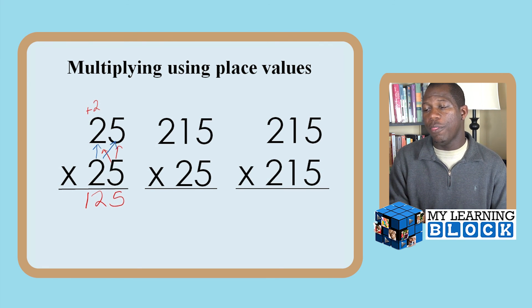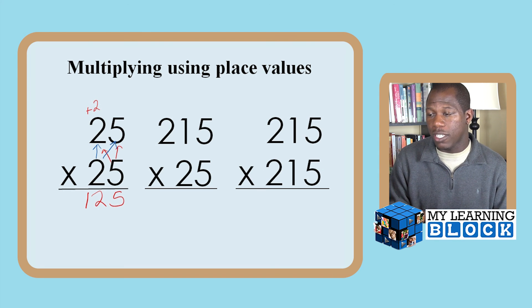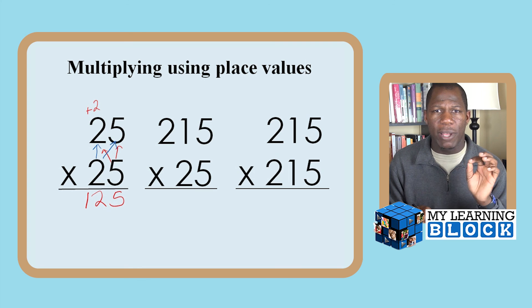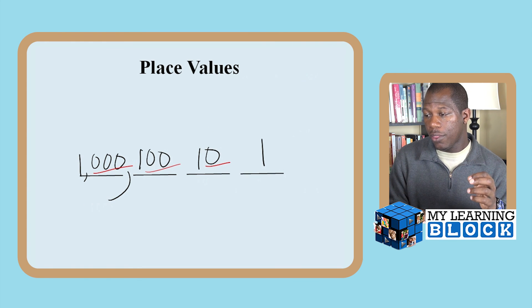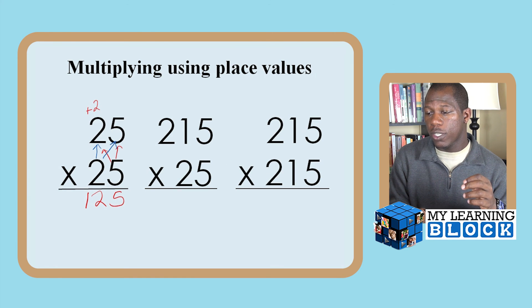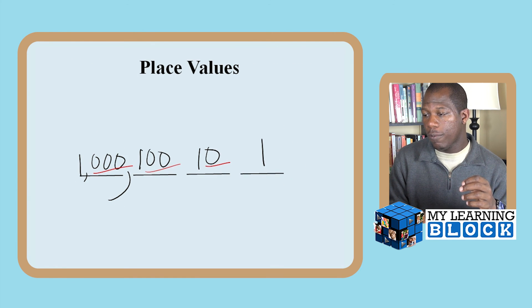They're going to take 2 and multiply times the number in the ones place and then the number in the tens place. But what is different about this 2 than about the 5? Well, the 2 is in the tens place. So what we're going to have to do is we're going to have to account for this 0 because the 2 is in the tens place.